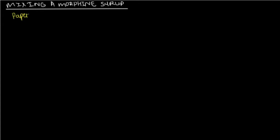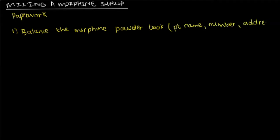So, step three is going to be the paperwork. First, balance the morphine book. You're going to need the patient's name, the file number or the patient number and the address. Also, the doctor's name. Then, in the front of the morphine powder book, there will be a control sheet where you're going to write the name of the patient and the dates and the name of the prescriber. This is just to easily identify misuse.